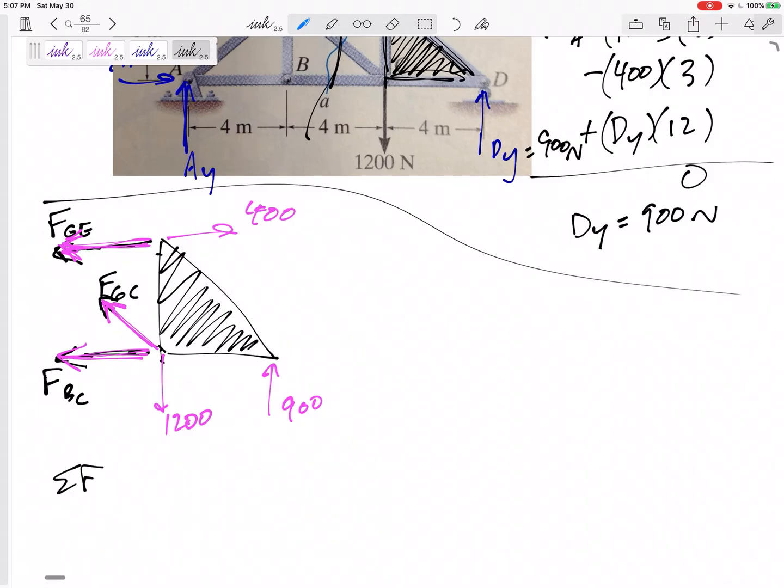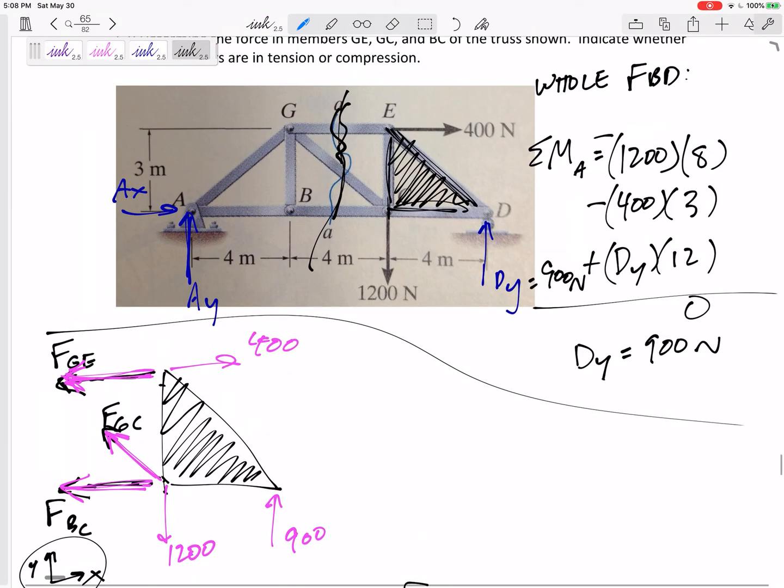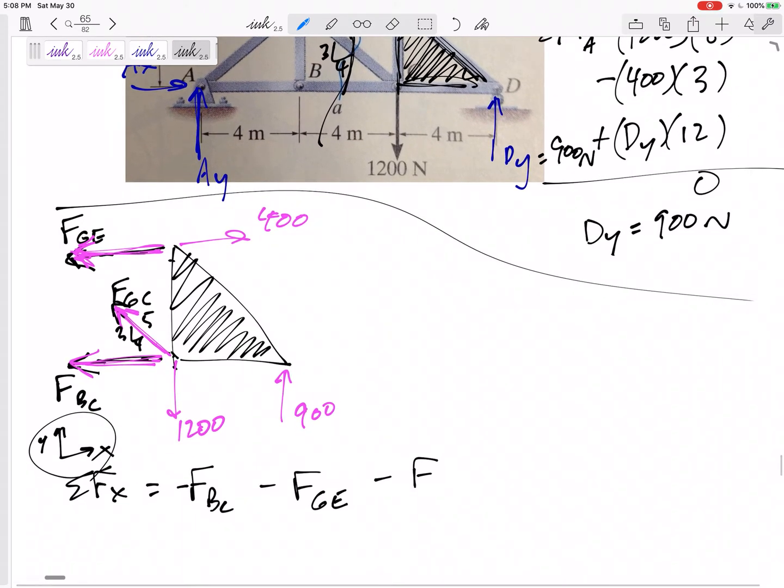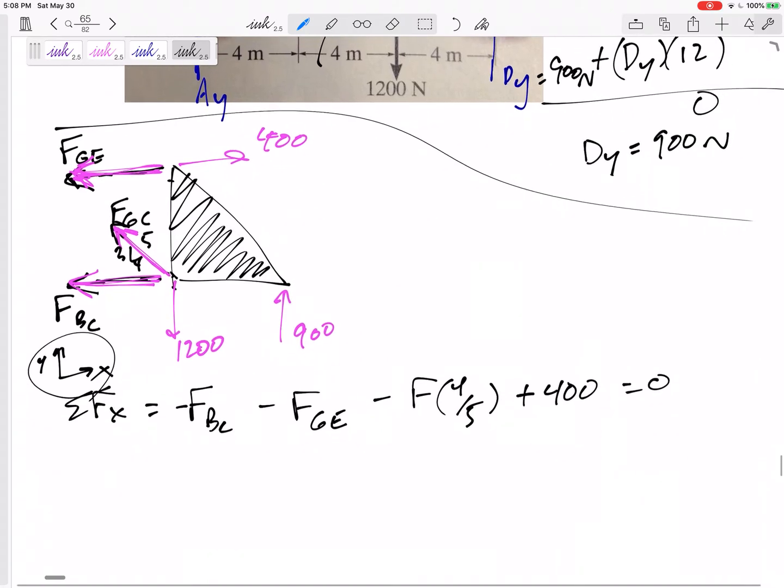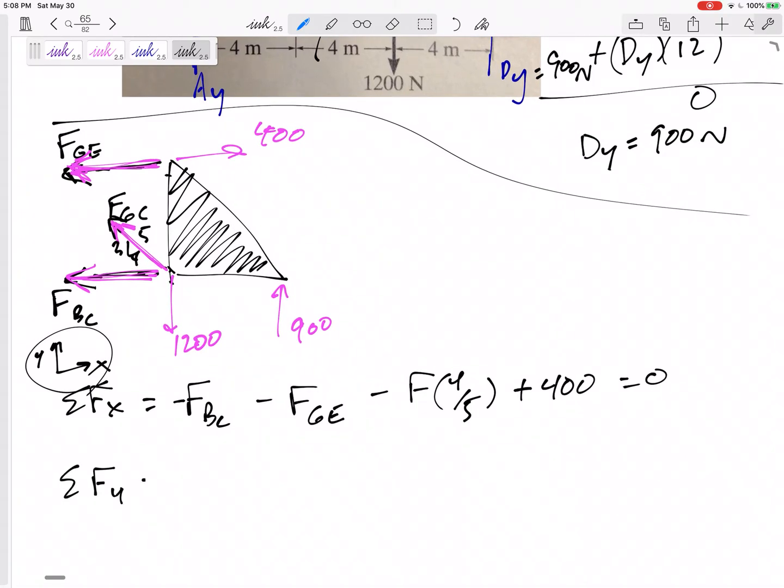So, let us sum the forces in the x-direction. Negative F_BC. Why not put negative here? Because it's to the left. I can't emphasize this enough and maybe it's not clear, but these equilibrium equations that I'm about to write, they are defined by your axes. They are defined by left, right, up, down. They're defined by your axes. Negative F_BC, negative F_GE. F_GC is over 4, up 3. That would make that a 3, 4, 5. So, this would be the 4 fifths component. And then 400 to the right. That one equation has three unknowns. I'm not going to touch that one for a while.